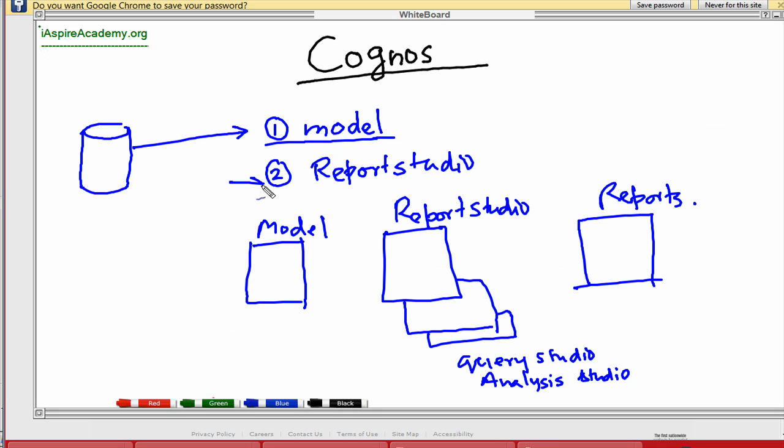Now, and then it has a component called Report Studio. So what Report Studio does is it interacts with your model and then helps you to create reports. So that means, let's say, this is your database and database has a relation with model. So which basically stores the metadata information of the database, where your Report Studio interacts with that, creates reports. And these are the reports which are accessed by end user.